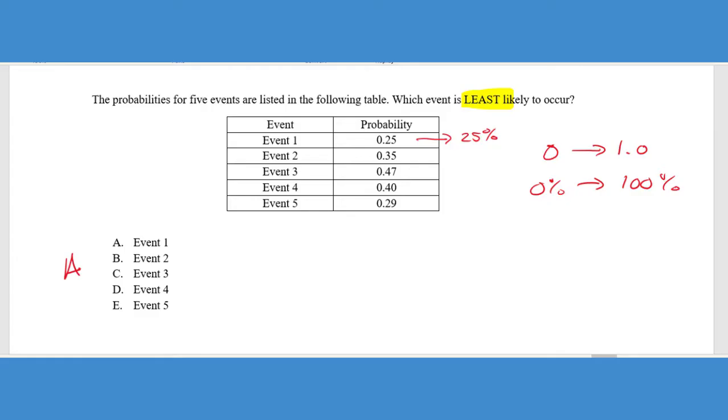It says which event is least likely to occur. So we're basically looking for the smallest probability here. If we look at these numbers, 0.25, which if you wanted to convert it to a percentage would be 25%, is the smallest of all the events. So that would be answer choice A. This is purely definitional. If you get this problem in the first 10 questions of the ACT, you need to be able to look at this question, immediately know what the answer is. This question should not take you more than five seconds to answer and quickly move on. This is a gimme and you need to get this right 100% of the time.